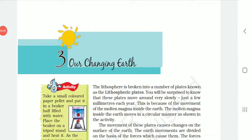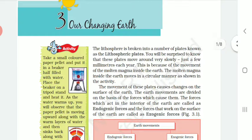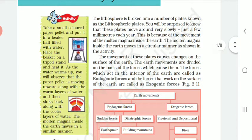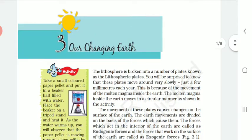Good morning children. Today we are going to start the third chapter of geography, that is 'Our Changing Earth.' In this chapter we are going to see how the earth is continuously changing. These changes we cannot see with our open eyes, but they are occurring continuously.